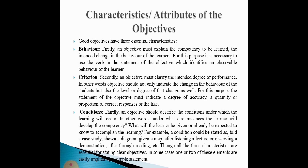Good objectives have three essential characteristics. First, behavior: an objective must explain the competency to be learned — the intended change in the behavior of the learners. For this purpose, it is necessary to use a verb in the statement of the objective which identifies an observable behavior of the learner.